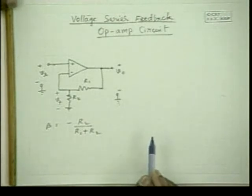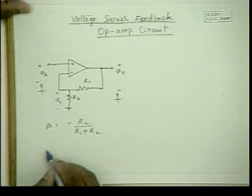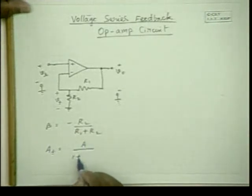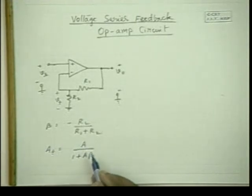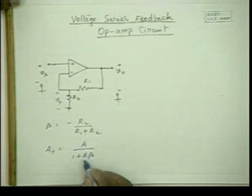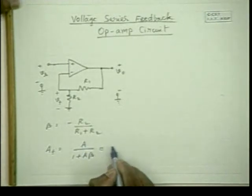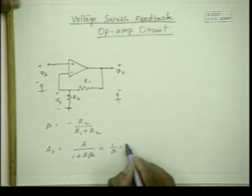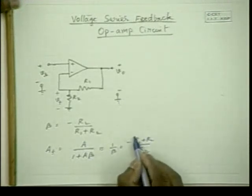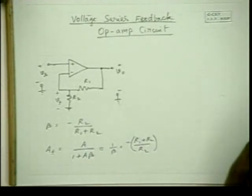Hence, it is a voltage series feedback amplifier. The gain of this amplifier is A by (1 + A·beta). When A is infinity — practically, A is very high, of the order of tens of thousands in practical operational amplifiers — and when A·beta is much greater than 1, the gain is approximately equal to 1 by beta, which equals minus (R1 + R2) by R2 in this example.